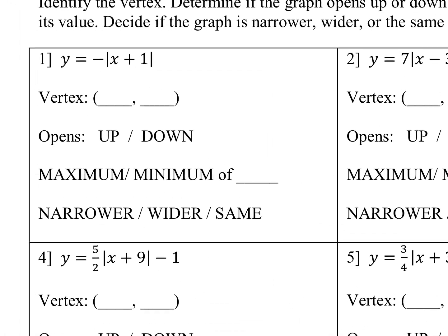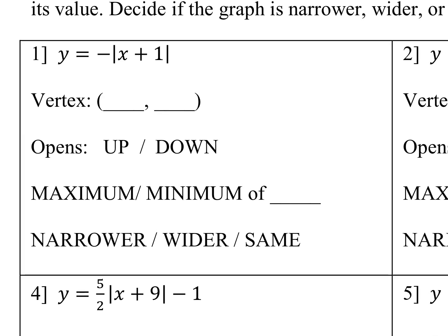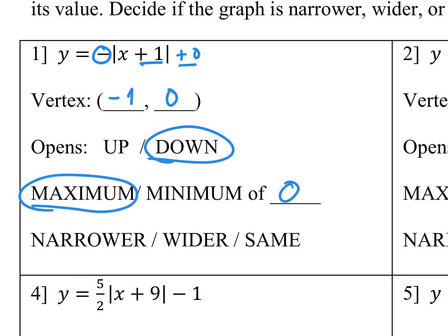Let's start with number one. Y is equal to negative absolute value of X plus 1. The vertex is going to be negative 1 and then 0. Since there is a negative in front, that's going to tell me it's going to open down. Since it's going to be opening down, I have a maximum of 0. Since there is nothing in front except negative 1, that's going to be the same width.